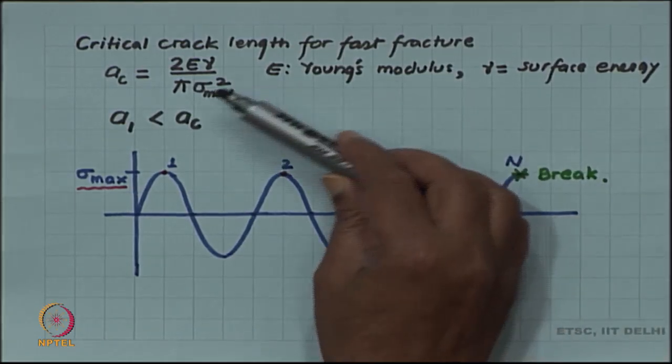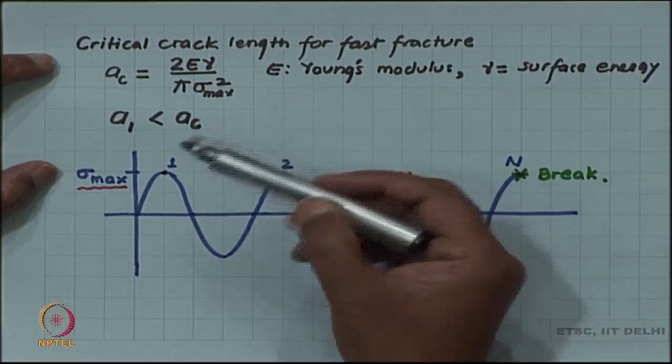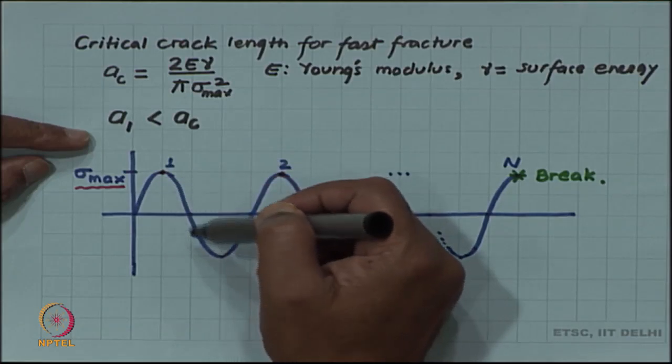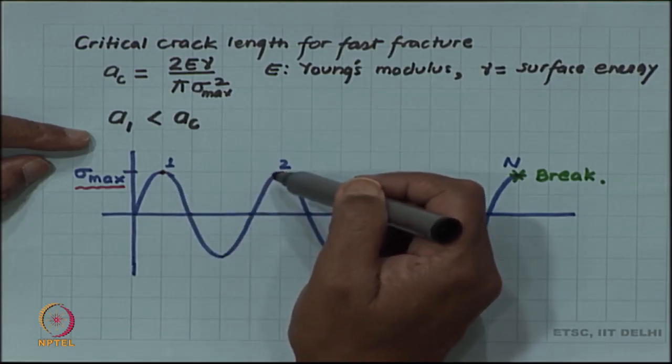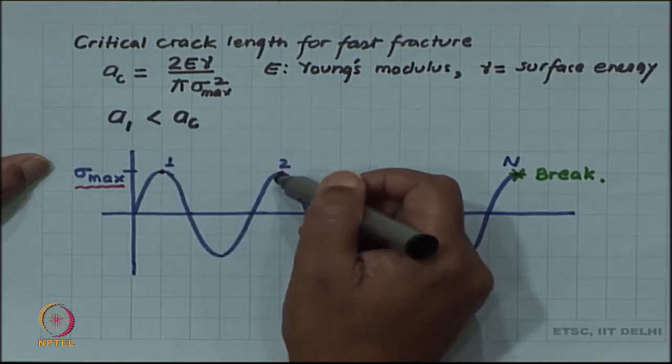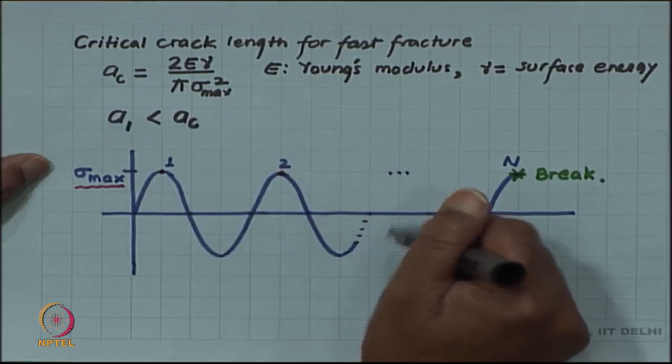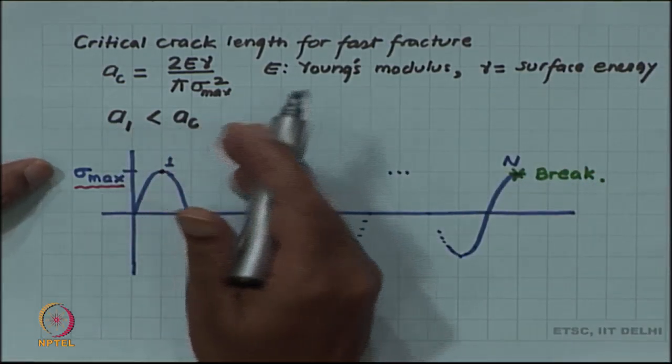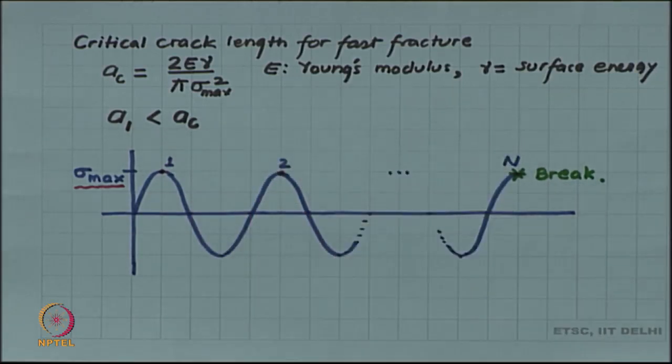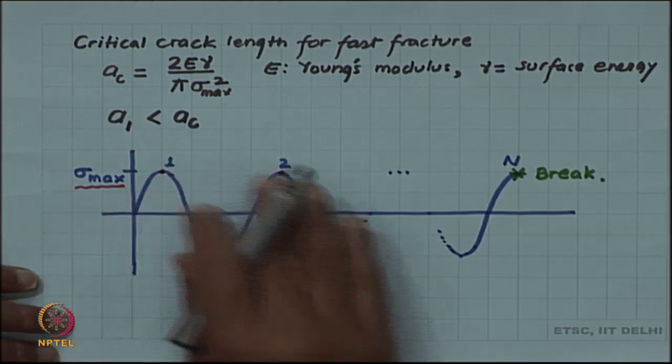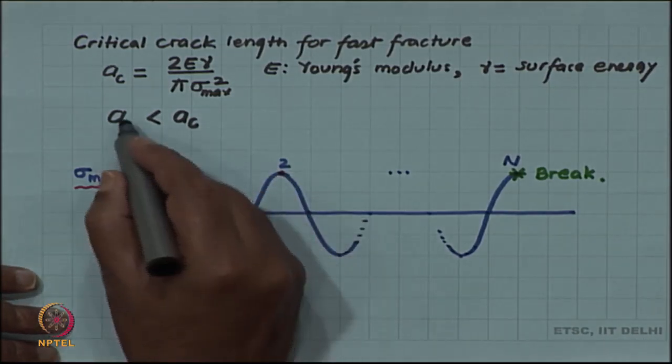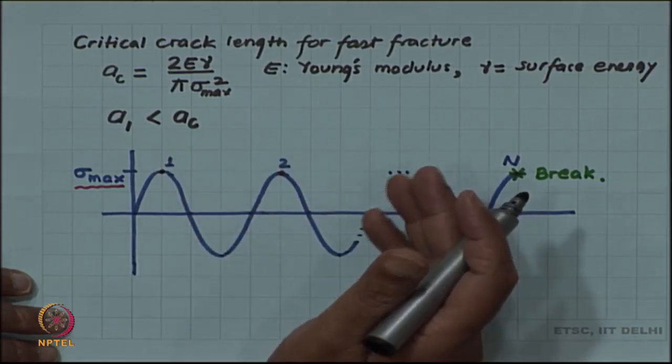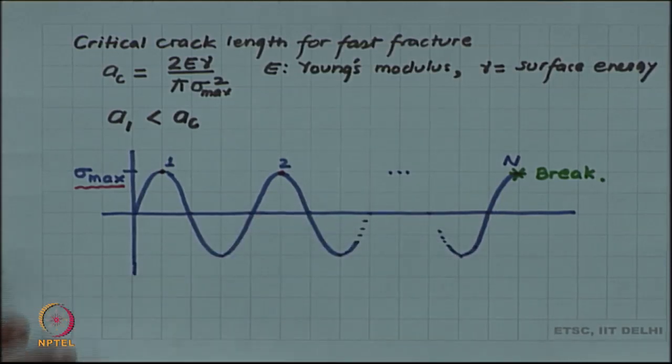So at sigma max, a crack of length A1 will not grow, and A1 is the crack length existing in the material. Since after unloading we are reloading again, this crack still will not grow. So if we continue, in the nth cycle also a crack of length A1 should not have grown. This is fine, but what is being missed in this analysis is that the initial crack length A1 will continue to grow with every cycle. This is called subcritical crack growth.